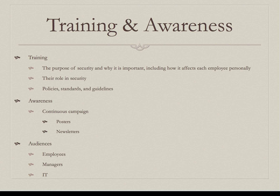Training has three different audiences: employees, managers, and IT. Employees get basic security training on the policies, standards, and procedures that apply to what they do every day. Managers get that same training, plus training on how to create procedures that comply with standards and guidelines and how to measure success. IT receives the same training as employees, and IT managers get the same training as other business managers, but IT also has to be trained on the technical aspects of security — what is allowed, what is not, and how security design is built into networks and systems.